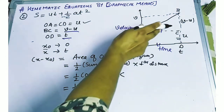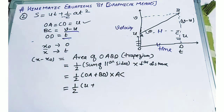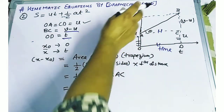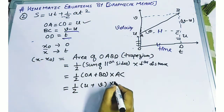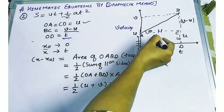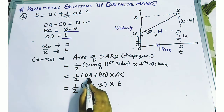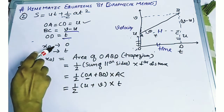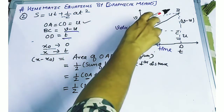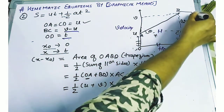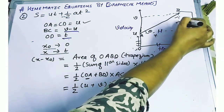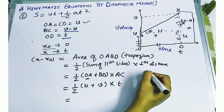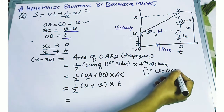What is the value of BD? BD is v. And AC? AC will be the time period t. So OA equals u, BD equals v, and AC equals t. This much is v minus u, this is u, and this whole will be v.